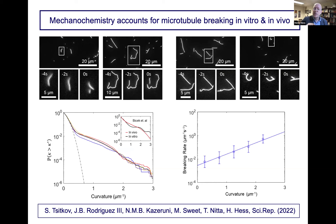Microtubules also break sometimes as they move across the surface. My graduate students Juan Rodriguez, Stanislav Zipkov, and Neda Lassie-Pasarouni, along with our Japanese collaborators, published a paper in Scientific Reports on how frequently microtubules break depending on their curvature. If they're going fairly straight there's a very low breaking rate, but bending the microtubule increases the breaking rate. This behavior can be explained by simple mechanochemistry — the idea that applying forces to intermolecular bonds increases the rate of unbinding exponentially.